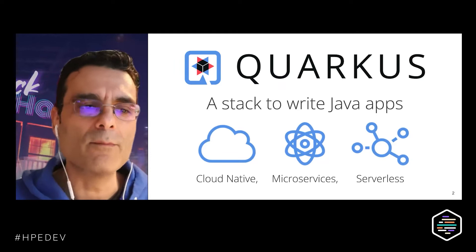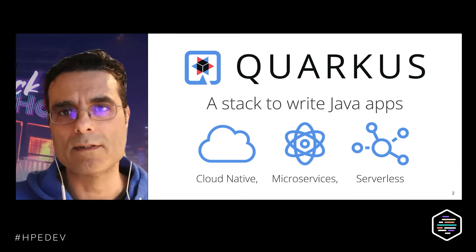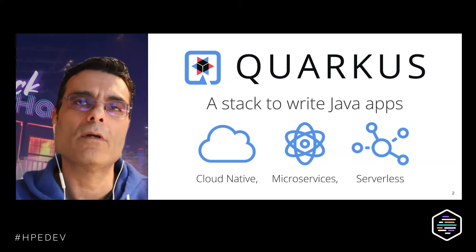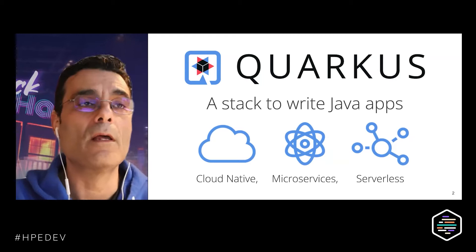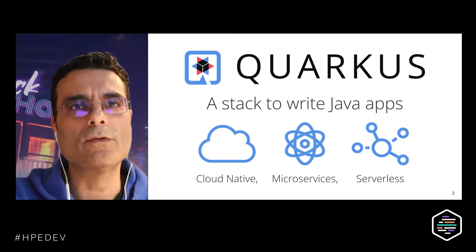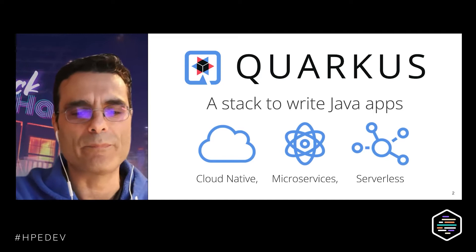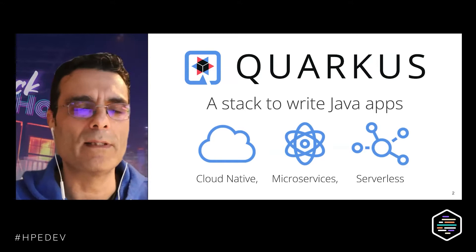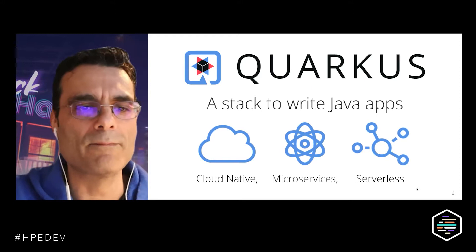So what is Quarkus? Quarkus is a framework — a software stack, a framework of frameworks — it's a way to write cloud native applications. When we say cloud native, we really mean containerized applications that target some sort of Kubernetes environment. This is where Quarkus really shines, think microservices or serverless applications. But you can also use it for monoliths, command line interfaces, and edge deployments where you want really small, really fast applications.